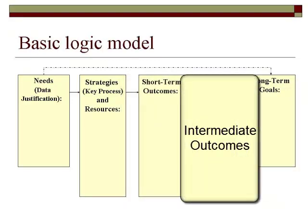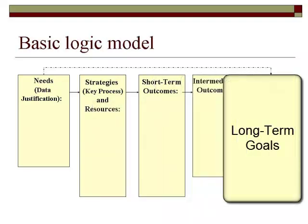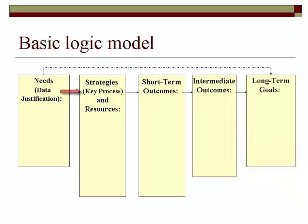Intermediate outcomes should be the next changes expected in knowledge, skills, attitudes, or behavior. These are often the initial changes in student outcomes. Long-term goals are the ultimate outcomes or goals expected. Then check connections — add arrows to indicate relationships between strategies, activities, and outcomes.